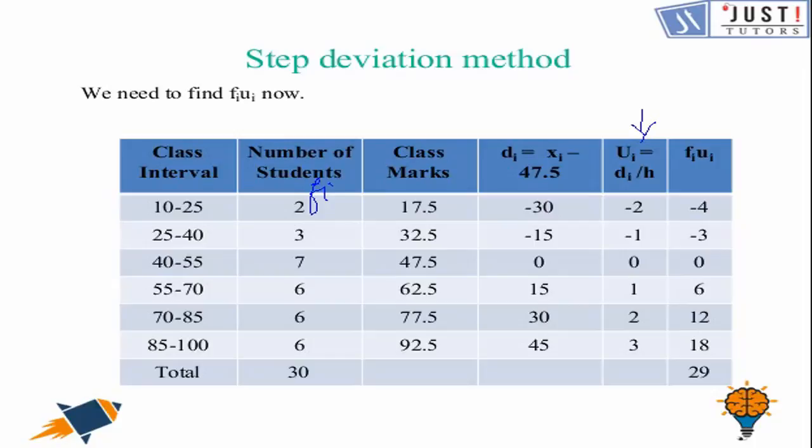So 2 times minus 2 is minus 4. 3 times minus 1 is minus 3. 7 times 0 is 0. 6 times 1 is 6. 6 times 2 is 12. 6 times 3 is 18. Now we need to find the total of fiui which is 29 in this case.